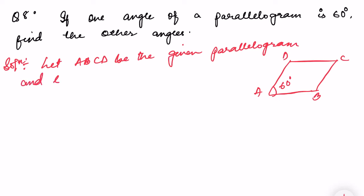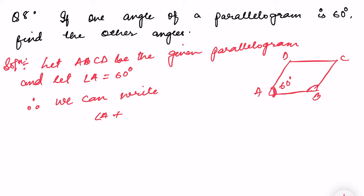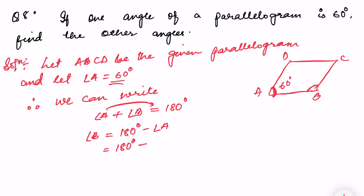Let angle A be equal to 60°. Therefore, we can write angle A plus angle B is equal to 180°, because these are co-interior angles of a parallelogram. So angle B is equal to 180° minus angle A.